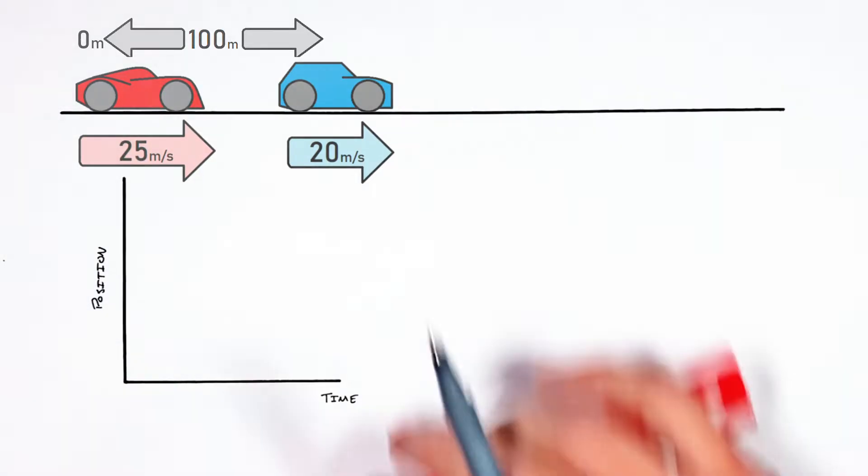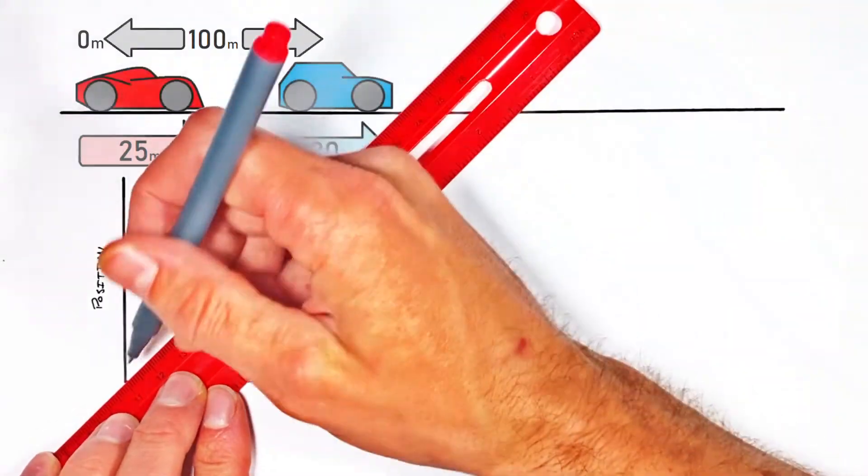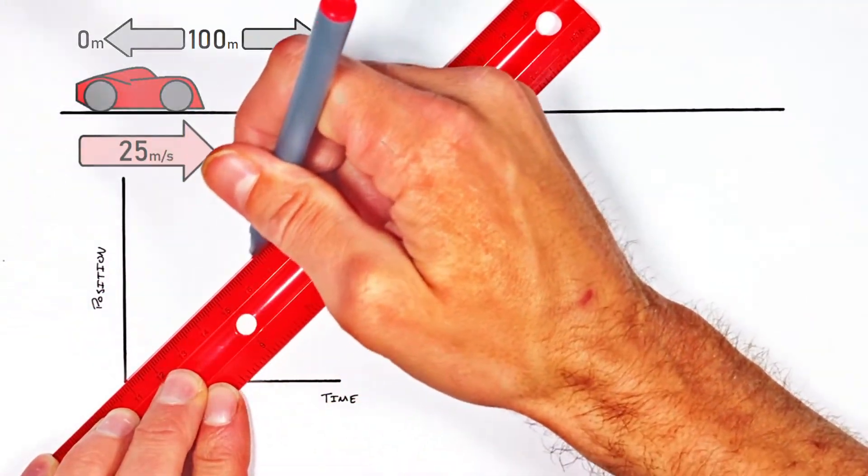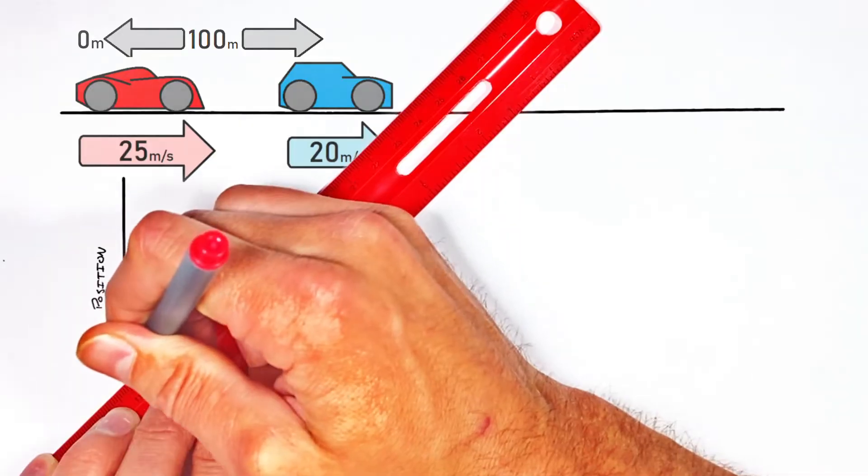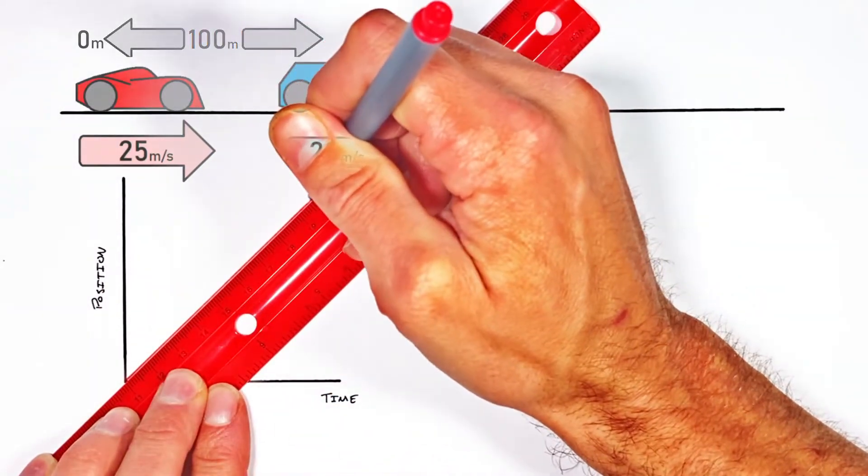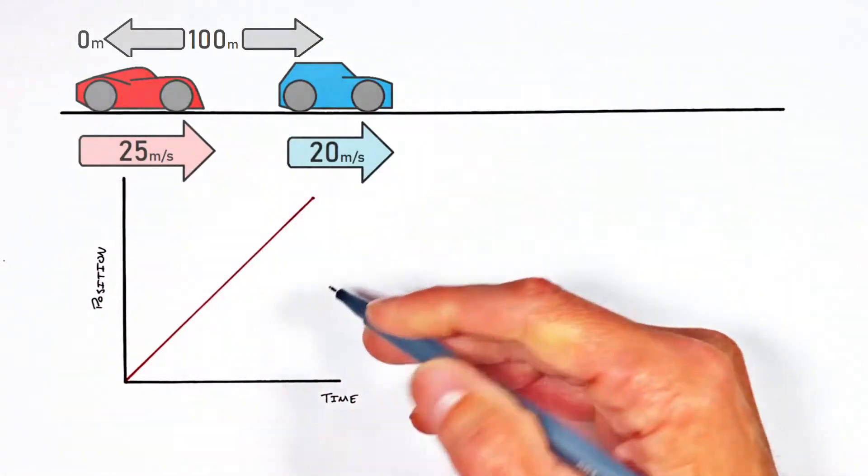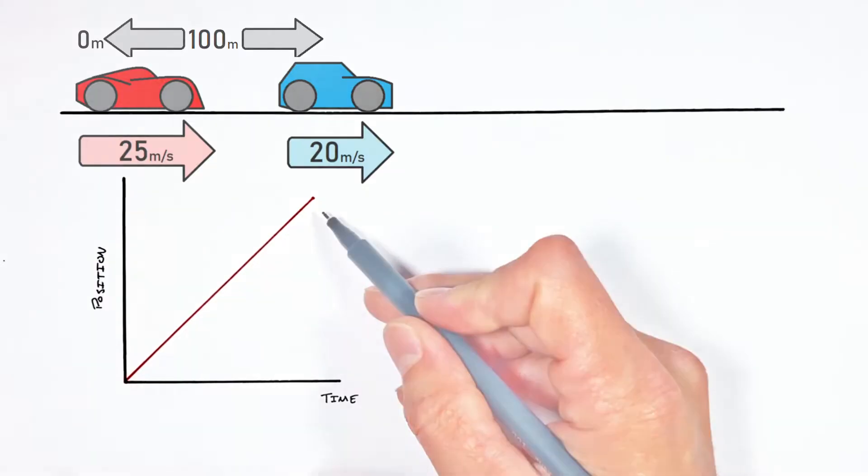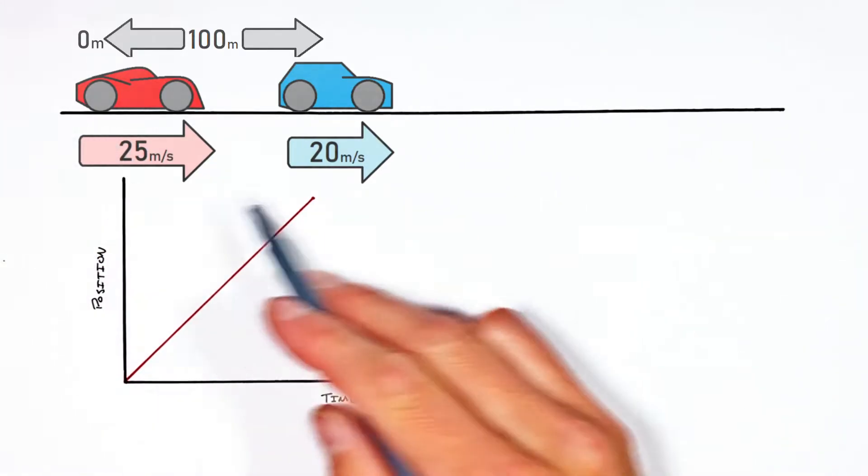Which means when we look on the position versus time graph, you'll see that faster car starts at a position of zero and is steadily moving forward at 25 meters per second. And because we said the fast car starts at a position of zero,